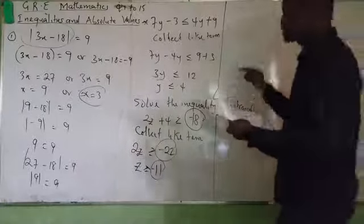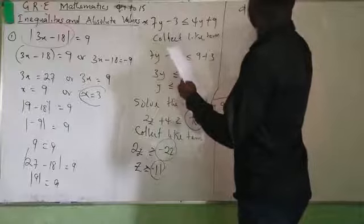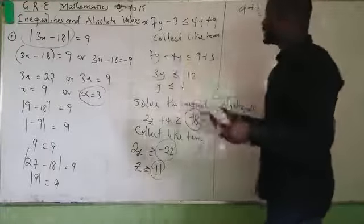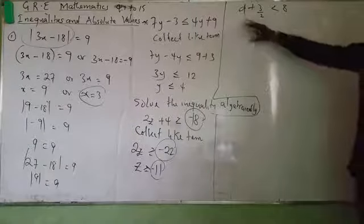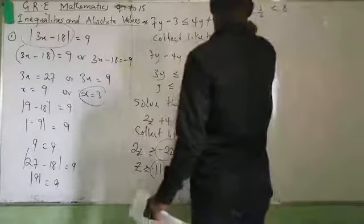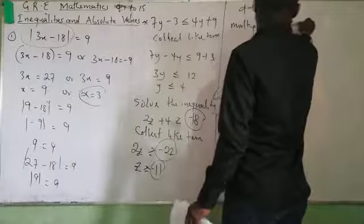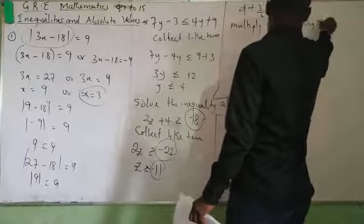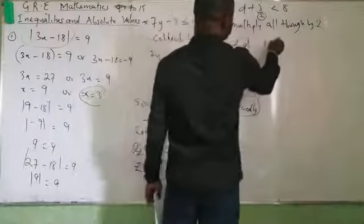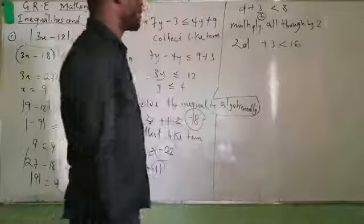I have another problem: (D plus 3) all over 2, less than 8. Whenever you have an inequality in the form of a fraction like this, just multiply all through by 2. Multiplying by 2 gives 2D plus 3 less than 16.